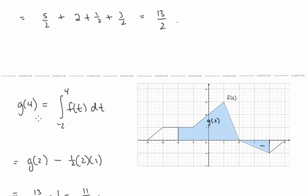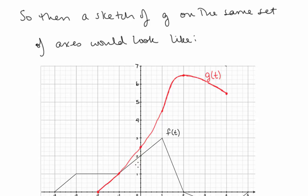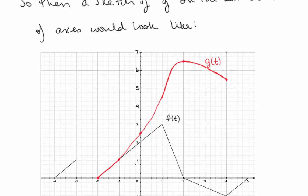For g(4): g(4) is the integral from negative 2 to 4 of f(t) dt. We want the area above the axis with a positive sign and the area below with a negative sign. The area above was g(2) = 13/2. From that we subtract the area of the triangle: ½×2×1 = 1. So g(4) = 11/2. From f(t), we're developing a new function g(t) based on areas computed from a fixed constant — in this case, negative 2. We could sketch a graph of g(t) plotting the values we computed.